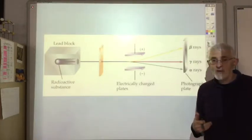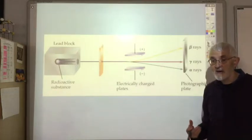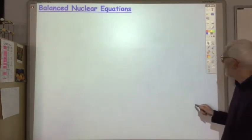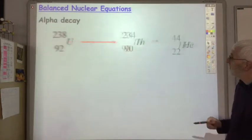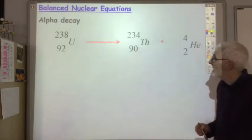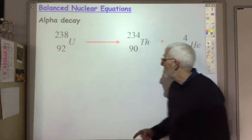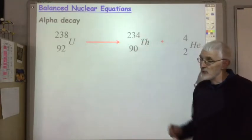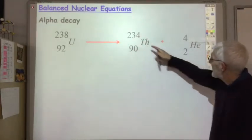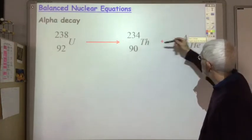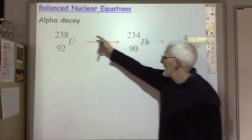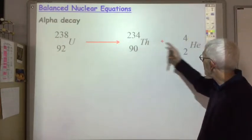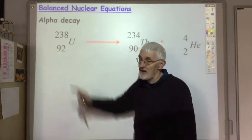With our knowledge of alpha, beta, and gamma radiation, we should be able to write balanced nuclear equations showing what's produced when a radioisotope undergoes decay. Looking at alpha decay first: uranium-238 emits an alpha particle and the product is thorium-234. Notice that the mass numbers on the right-hand side — 234 plus 4 — equal the mass number on the left-hand side, and the atomic numbers — 90 plus 2 — equal the atomic number on the left-hand side.